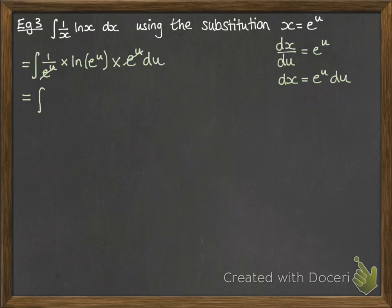Okay, now doing this integration, we have those e to the u's cancel out. And ln of e to the u, ln and e cancel each other out. They're the inverse of each other. So we end up just with u du. So integrating that, we get u squared over 2. And then replace the u with this substitution.